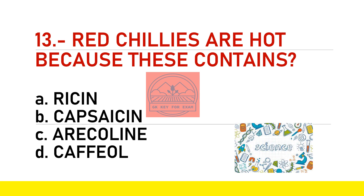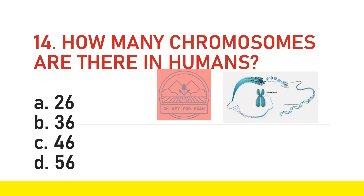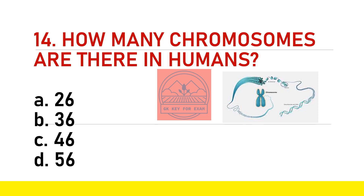The next question is: what compound gives red chillies their heat? The options are A) Racine, B) Capsaicin, C) E. coli, or D) Cafeol. The answer is B) Capsaicin.